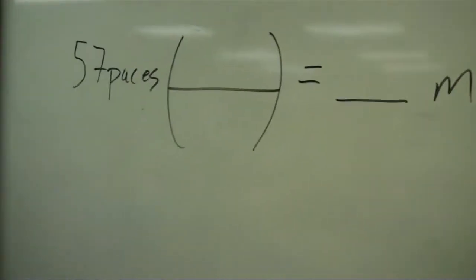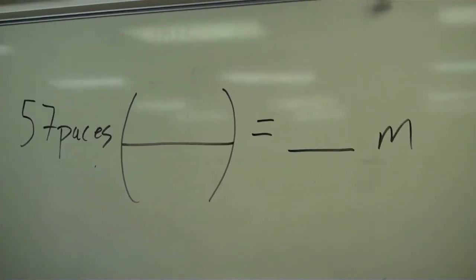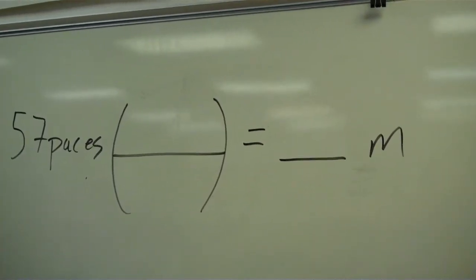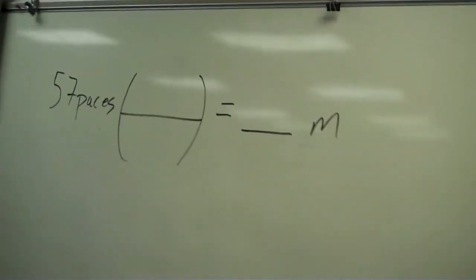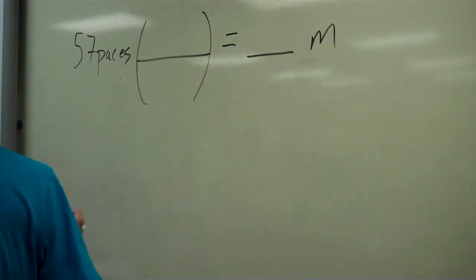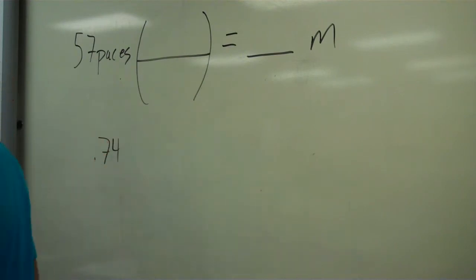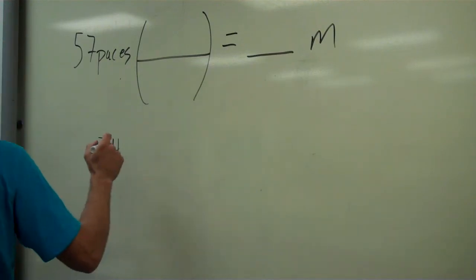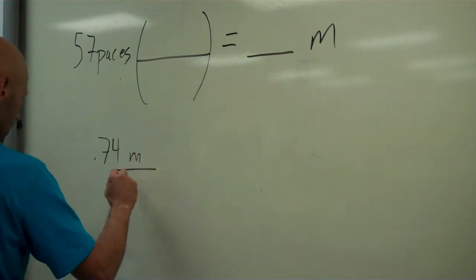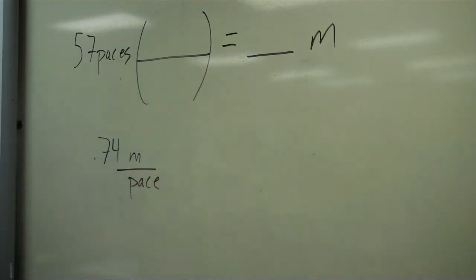Think back to last week when we did our pace calculation. We walked off 20 meters and counted the number of paces. You should have ended up with some number — probably around 0.74 or 0.8 — and that unit is meters per step, or meters per pace. That value is going to be unique for each of you.